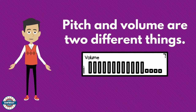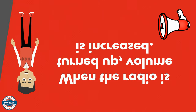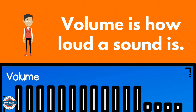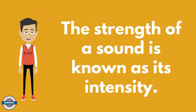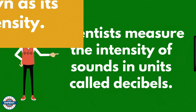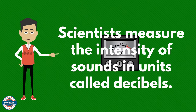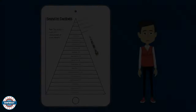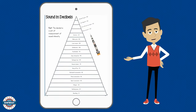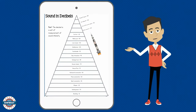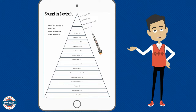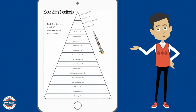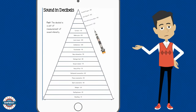Pitch and volume are different things. When you turn the radio up, the volume is increased — volume is how loud a sound is. The strength of a sound is known as its intensity. Scientists measure the intensity of sounds in units called decibels. As you can see on this infographic, a rocket engine can be as loud as 180 decibels, while just breathing is as low as 10 decibels.